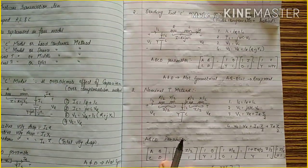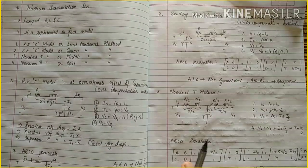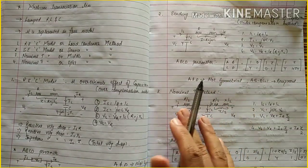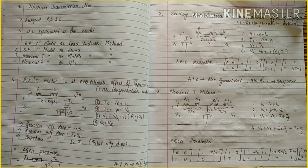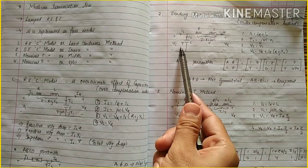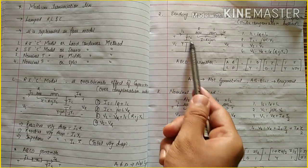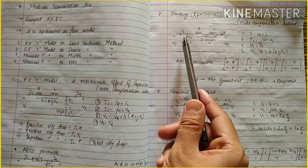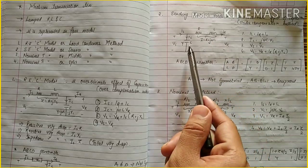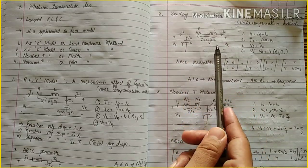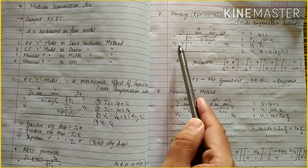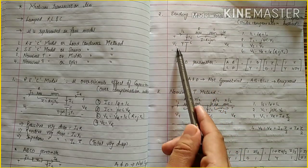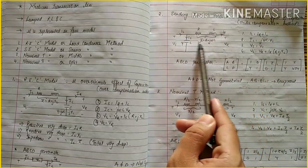The second model is the sending end capacitor model. In this method it underestimates the effect of capacitance, and the capacitor is connected towards the sending end. From the diagram it is clear that VS equals VC, and the voltage equation is VS equals IR·R plus jXL.